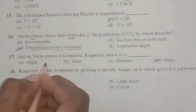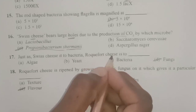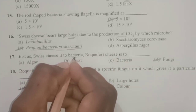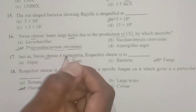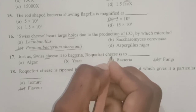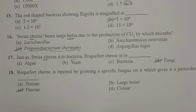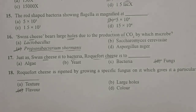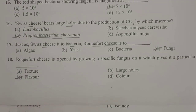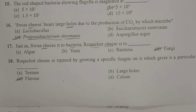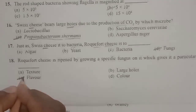Next: just as Swiss cheese is due to bacteria — Propionibacterium sharmanii — Roquefort cheese is due to a fungus known as Penicillium roqueforti. Roquefort cheese is ripened by growing this specific fungus on it, which gives it a particular flavor. Cheeses are characterized by different flavor, texture, and color. Roquefort cheese is ripened by growing Penicillium roqueforti, which produces a specific flavor.